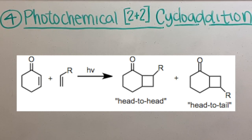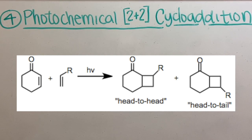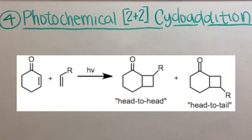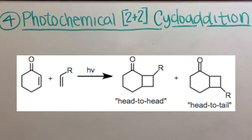In this reaction, an excited state enone reacts with an alkene upon exposure to light in order to produce cyclobutane. The two constitutional isomers produced are shown here.